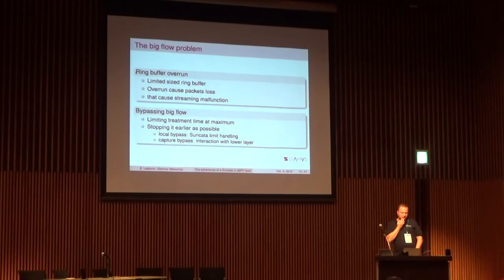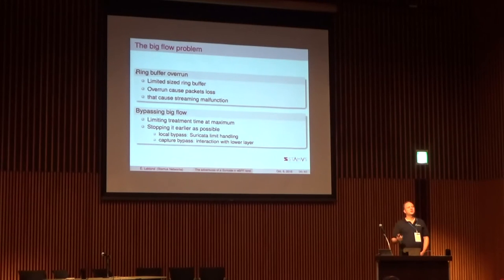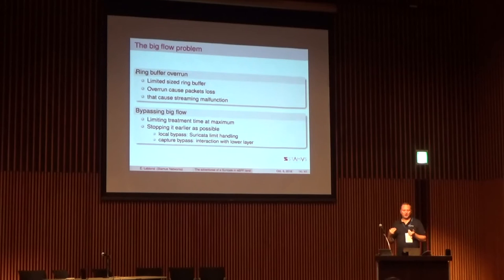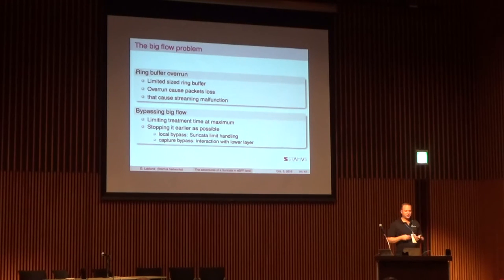Another problem we have is big flows. As you've seen, we have limited capacity in terms of bandwidth per thread, and we want one thread to handle all packets for a single flow. We cannot scale by splitting the flow because then we get back to out-of-order packets and lose our accuracy. Currently when we have a big flow we can't handle it anymore — we start to drop packets, and we don't only drop packets for that flow, so we lose a lot of content across various flows.